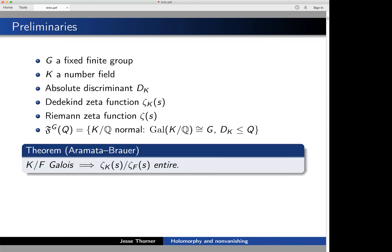A very beautiful result due to Aramata and Brauer tells us that if we have a Galois extension K over F, then ζ_K over ζ_F is going to be entire. This is predicted to be the case for non-Galois extensions as well, but that is a very hard, open question — an immediate consequence of the Artin conjecture, but wide open.